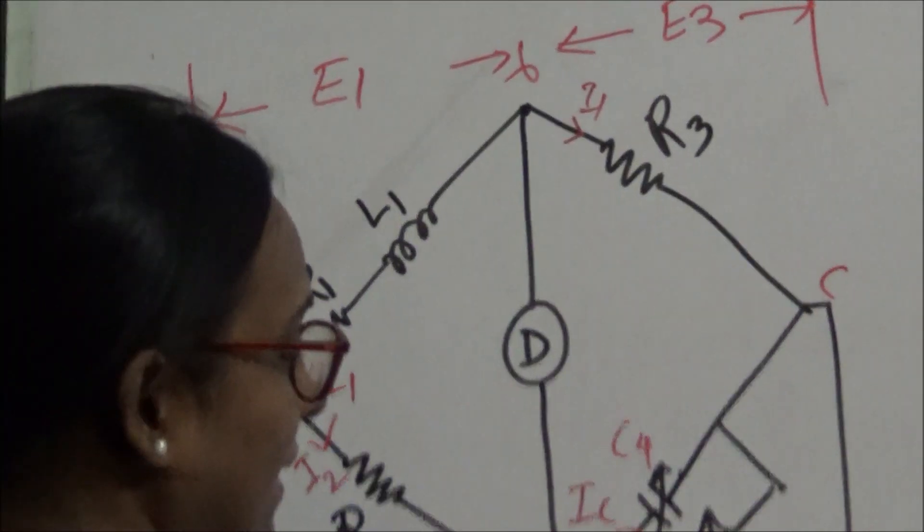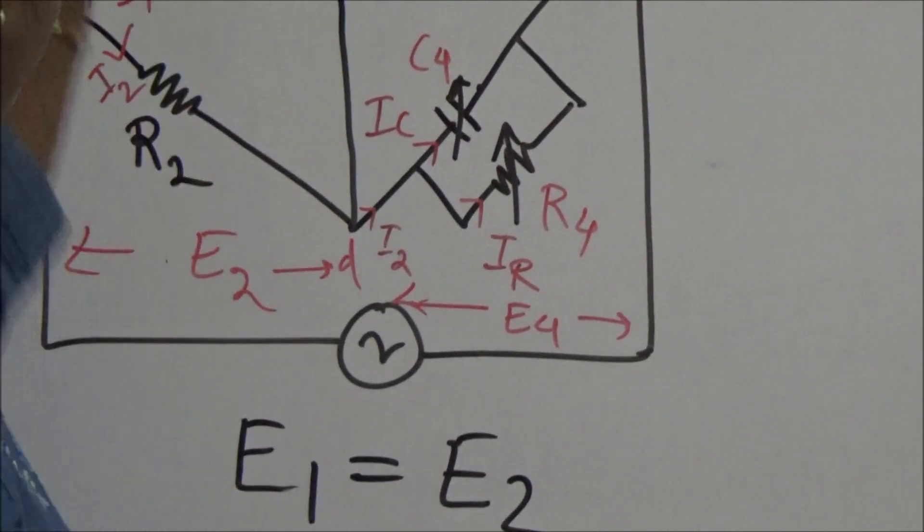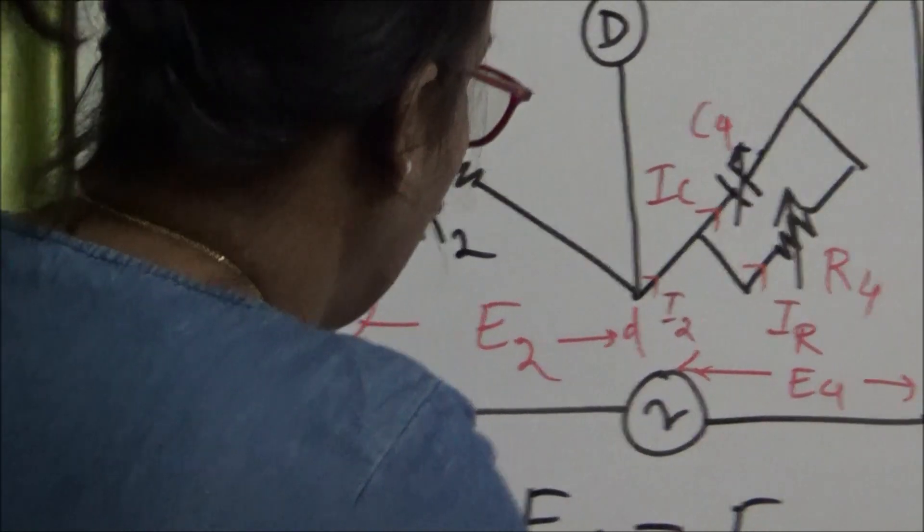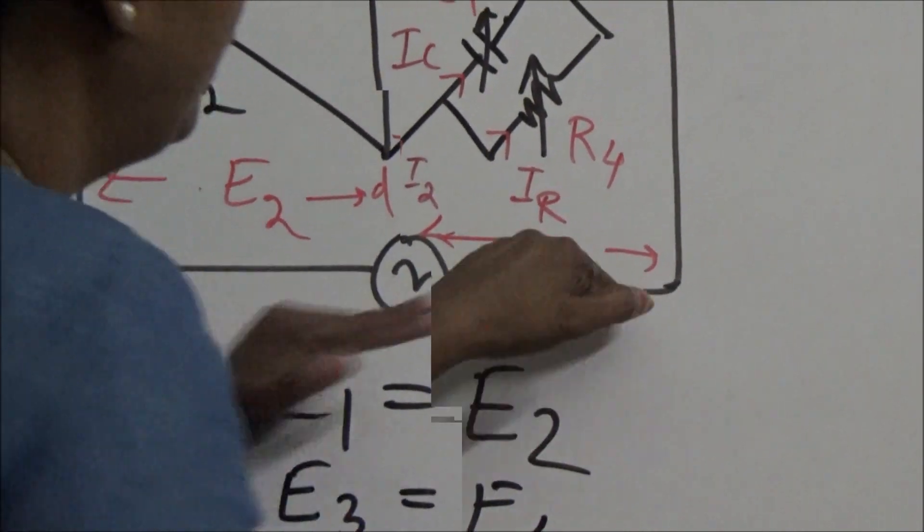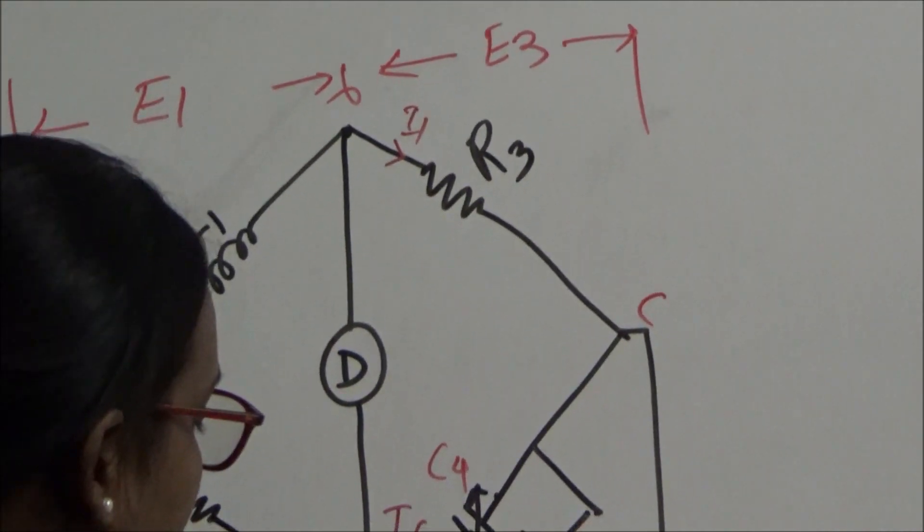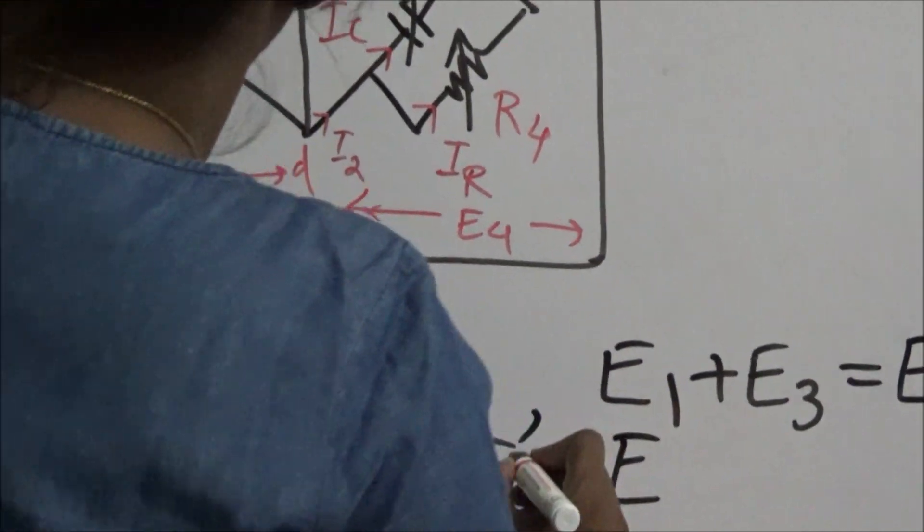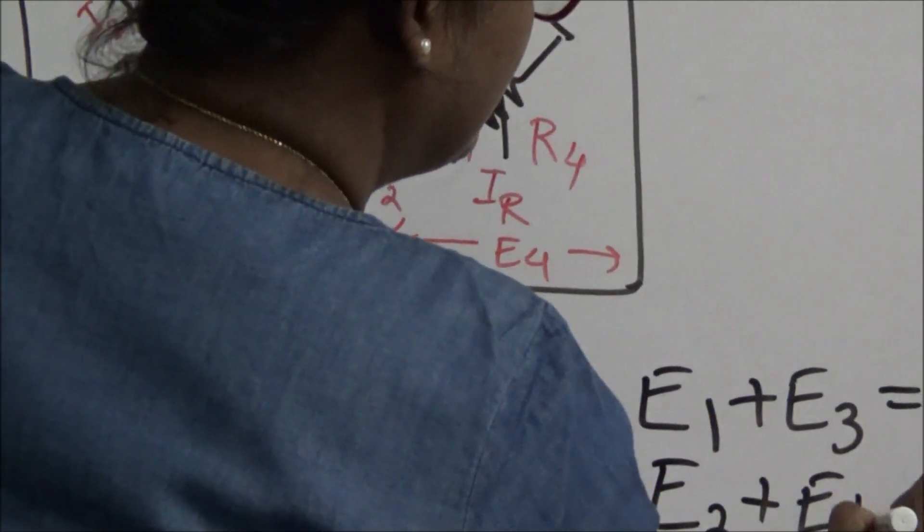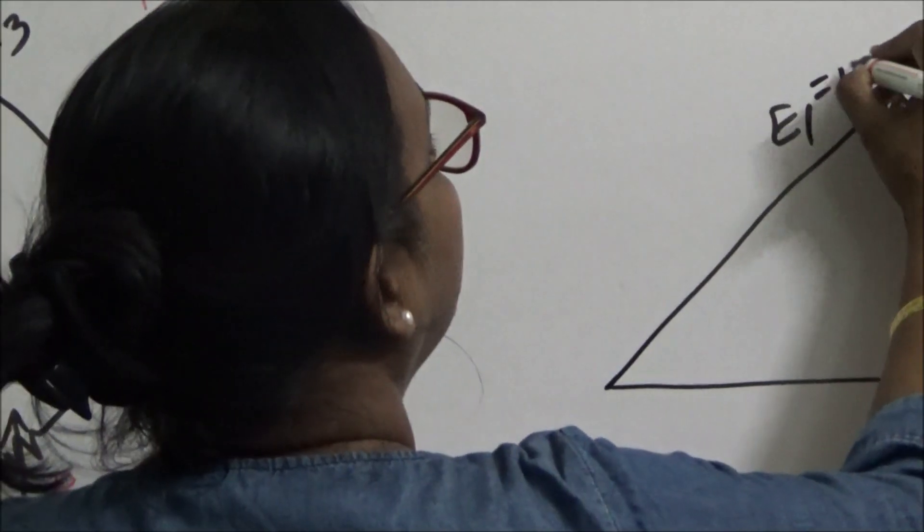At balance, E1 must be equal to E2. This E1 must be equal to E2. And E3 must be equal to E4. And E1 plus E3 is equal to E. So I know E1 is equal to E2. So this is E1 equal to E2.